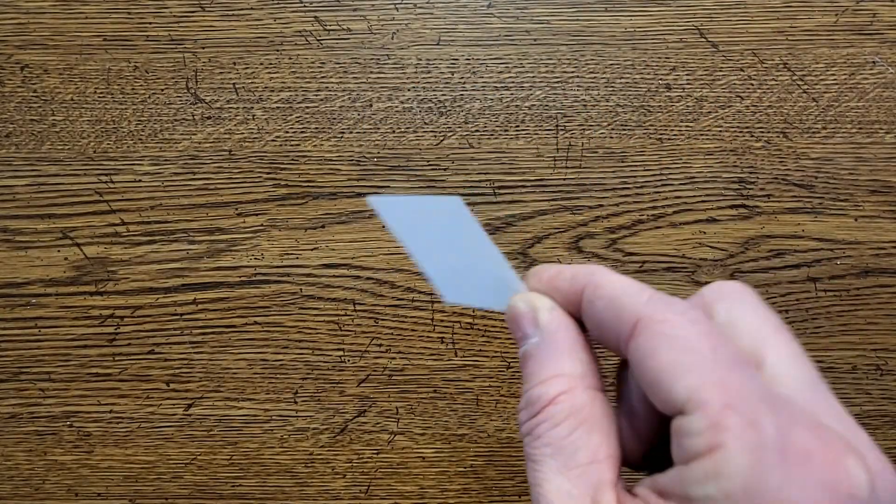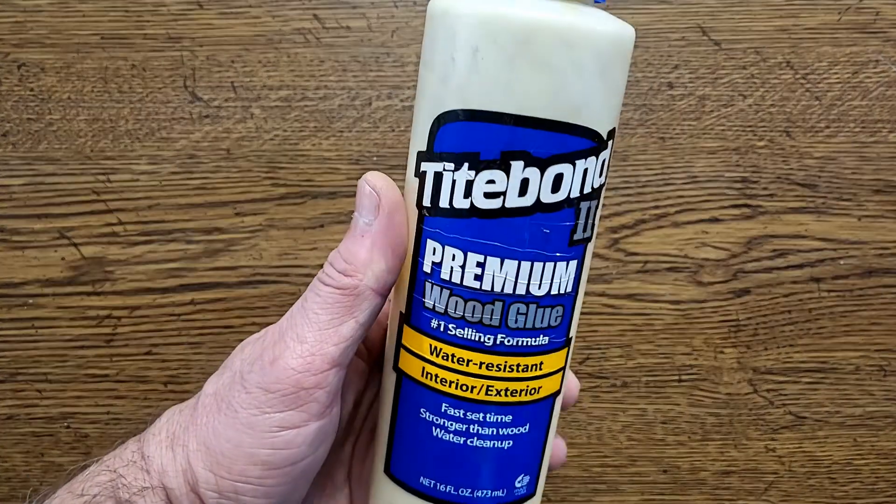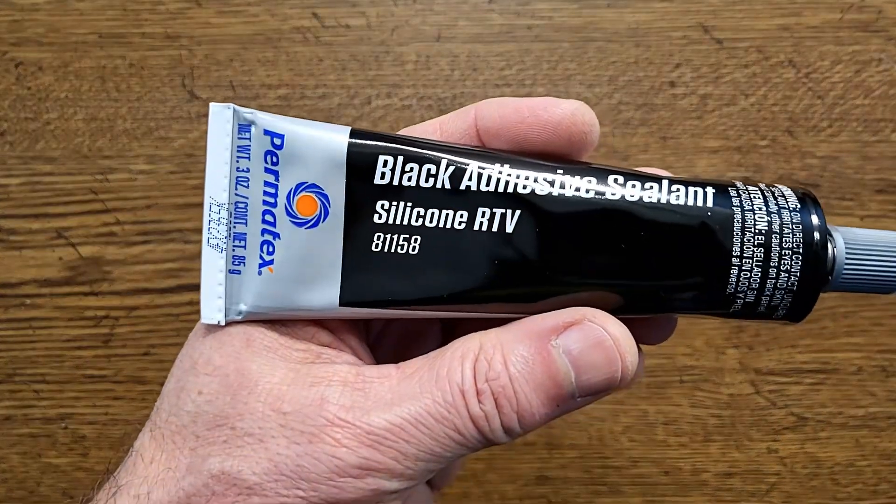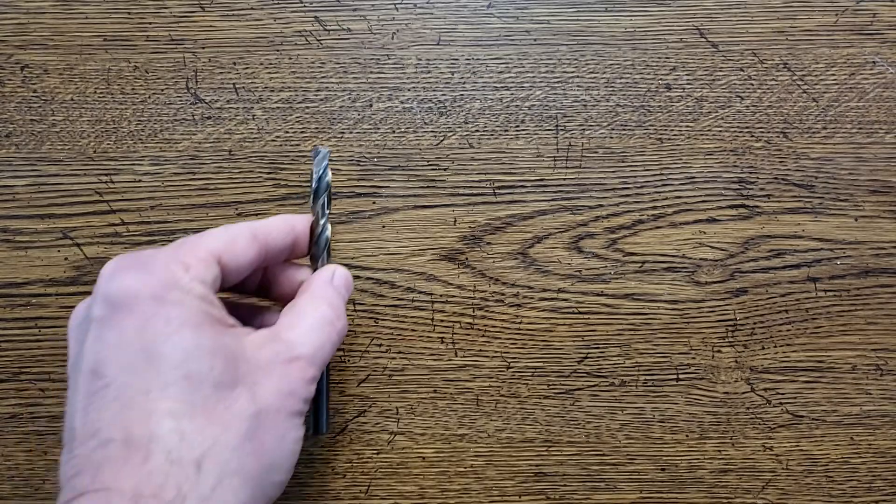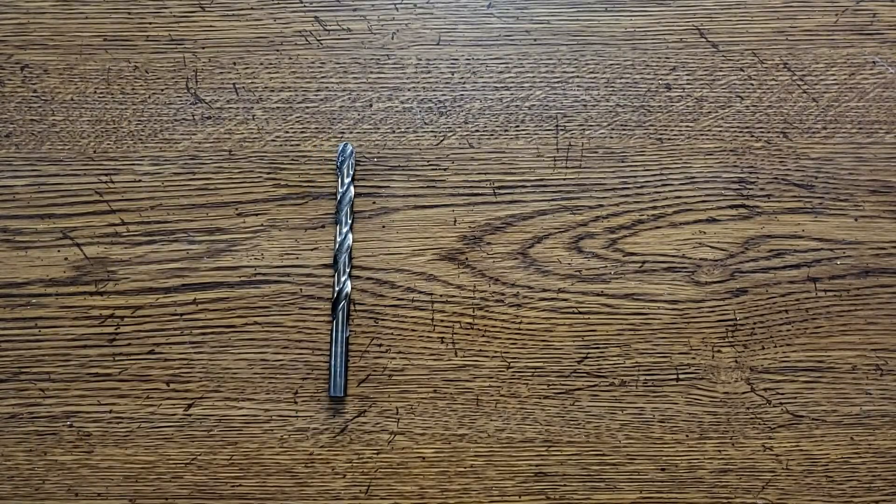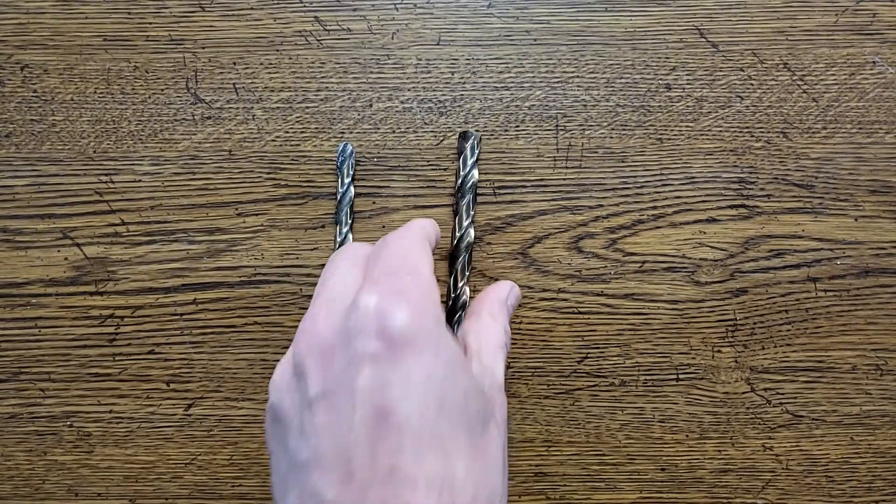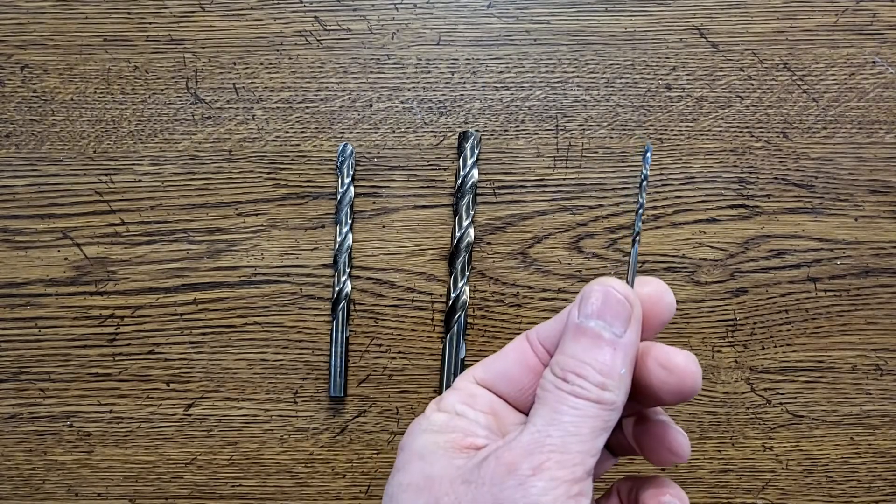A small piece of paper. Glue. Silicone caulking. Water. An 11/32nds inch drill bit. A 7/16th inch drill bit. And a 3/32nds inch drill bit.